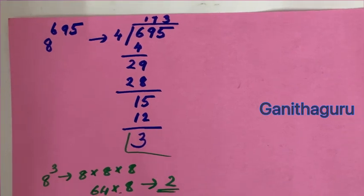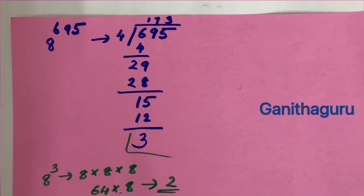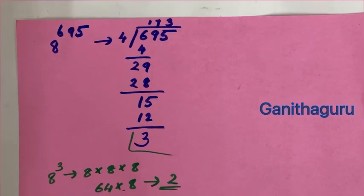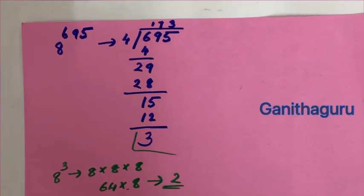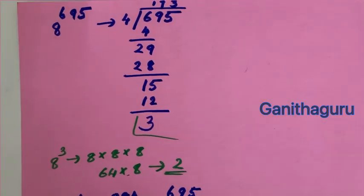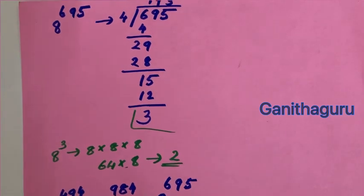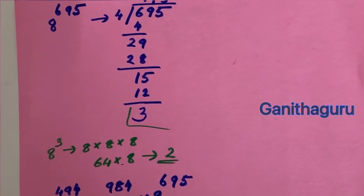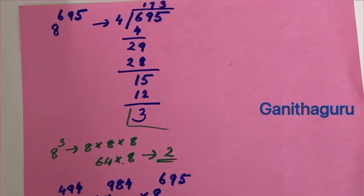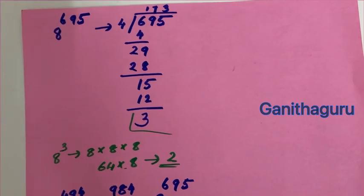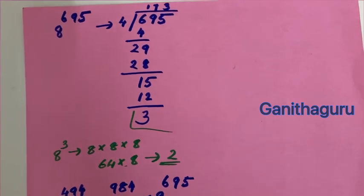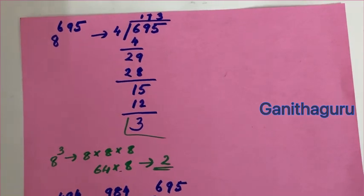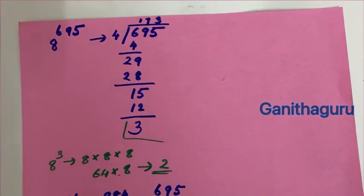For 8 raised to 695: 695 divided by 4 gives remainder 3. So last digit is 8 raised to 3. 8×8 is 64, 64×8 is 512. The last digit is 2.